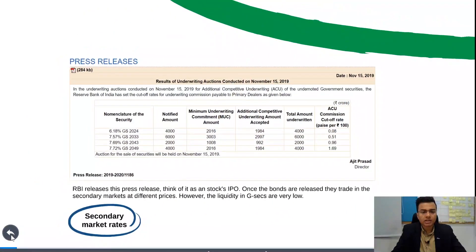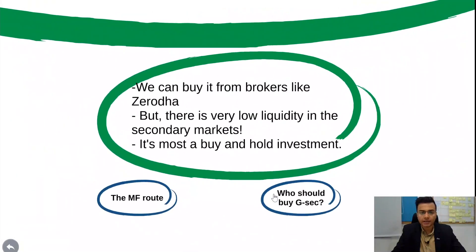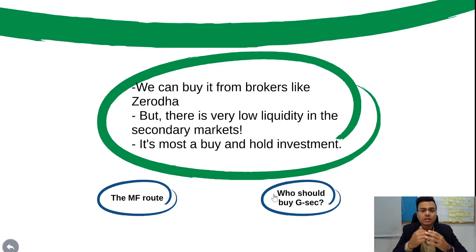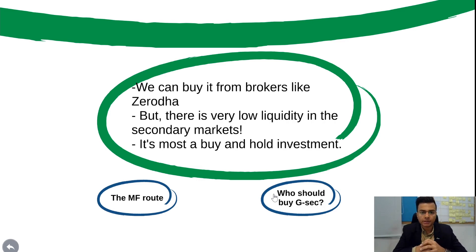How can you buy a government security? It's very simple — you can buy through brokers like Zerodha. However, one important thing to know is that liquidity in the secondary market is very low. If you buy a government security today, you can't expect to sell it tomorrow, or even within a week or a month. So if you're interested in government bonds, this is more of a buy-and-hold investment.